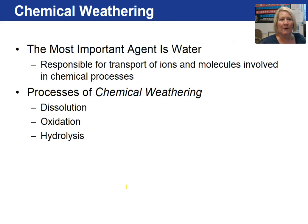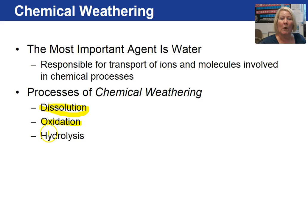The second type of weathering is called chemical weathering. The major process involved is the presence of water, which will transport ions and molecules that help in the chemical weathering process. We will look at three specific chemical weathering processes: dissolution, when a rock dissolves; oxidation, like the rust on your red wagon; and hydrolysis.